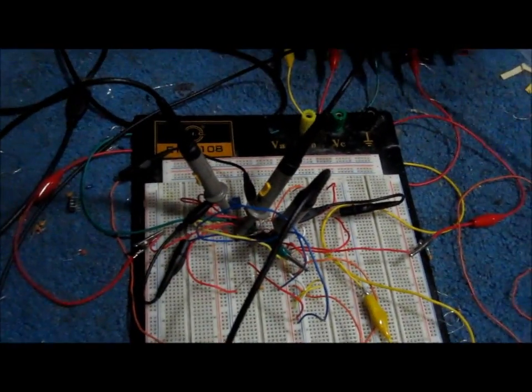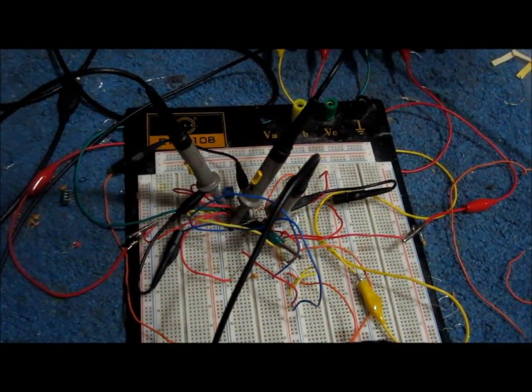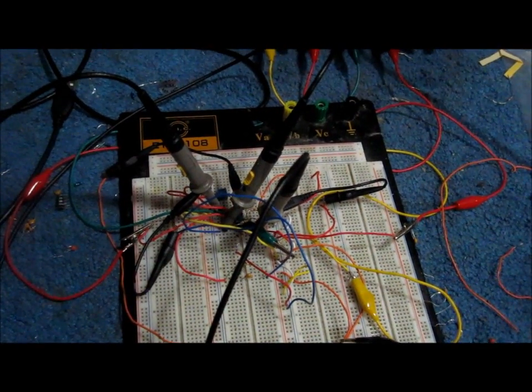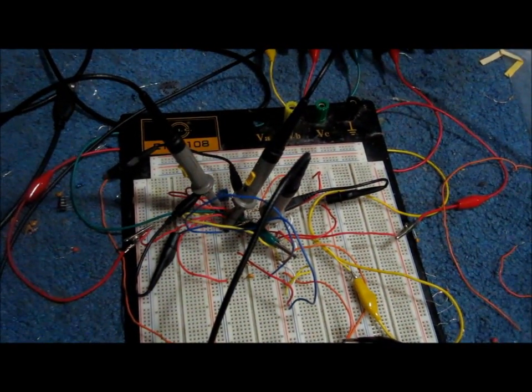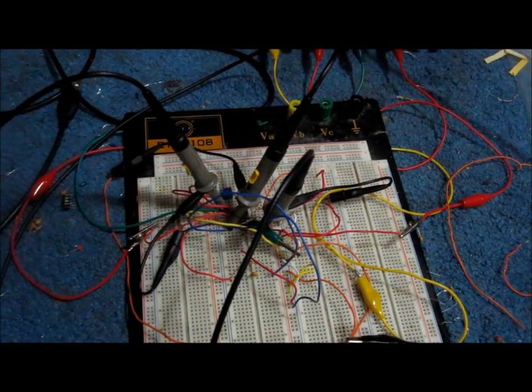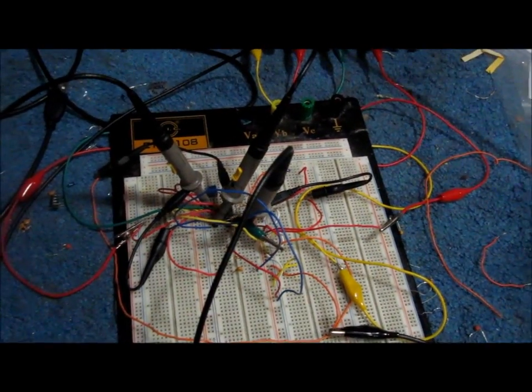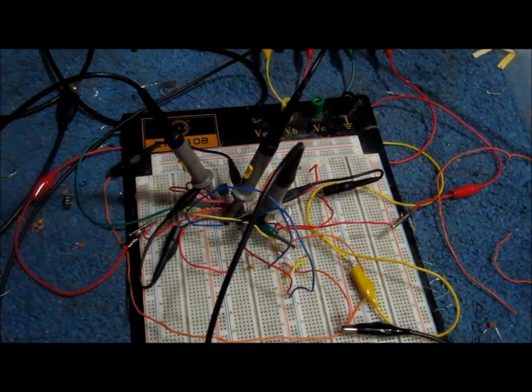Hey guys, this is a function generator circuit built using an LM324 chip. An LM324 chip is a quad op-amp chip composed of four individual operational amplifiers. But for this circuit we're just going to use three out of the four op-amps.